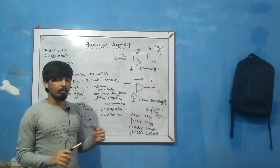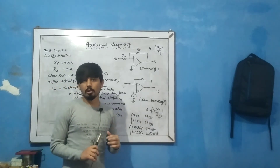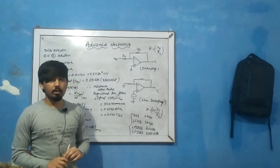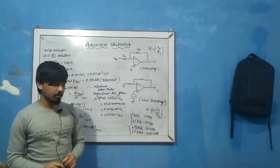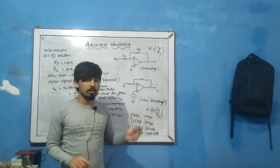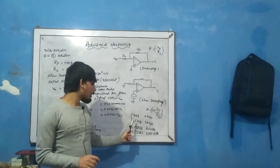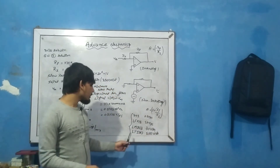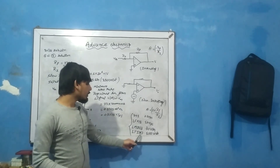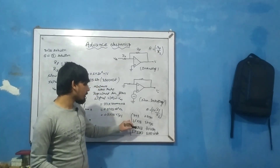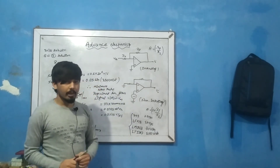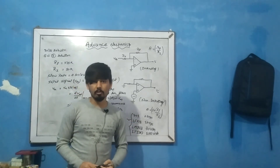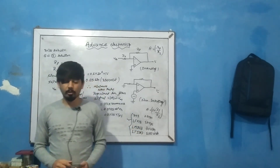The given slew rate is 0.5 volt per microsecond, which is less than the required 0.575 volt per microsecond. This means the output signal will be distorted. To avoid distortion, we need a higher slew rate op-amp. For example, the LF411 has 100 V/μs, the LM318 has 70 V/μs, and the LT1363 has 1000 V/μs. The best solution here is to use the LF411 at 100 volt per microsecond. That was the end of the numerical — hope you understood, thank you.